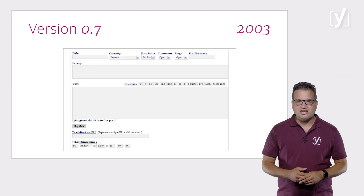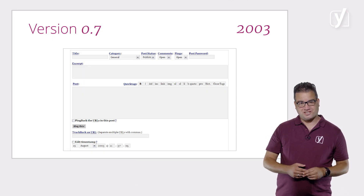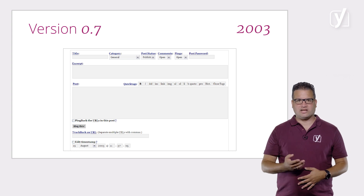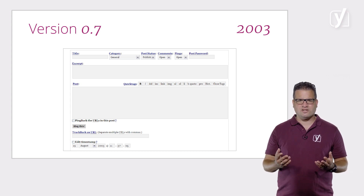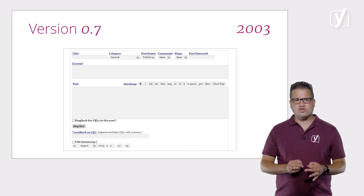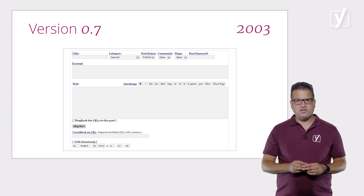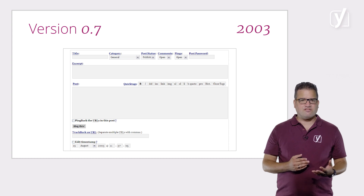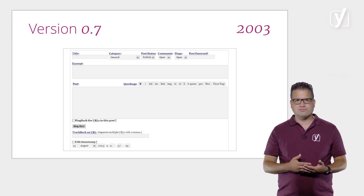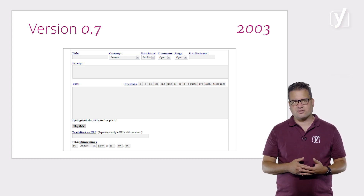Our journey begins with WordPress version 0.7. What you see here is what WordPress looked like at the beginning — looks quite different, don't you think? Back in that version, there was not much you could do besides blog. There was not even a dashboard in this version. Basically, all you could do was write a post, set its visibility and comment options, and put it in a single category.